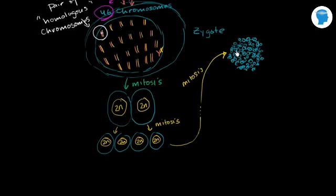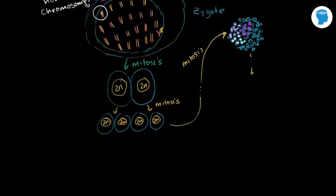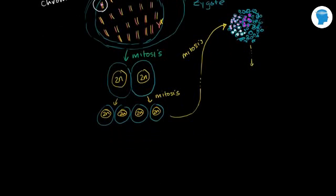These cells are going to differentiate into the different parts of my body. For example, these cells right over here might eventually keep replicating, and they and their offspring might eventually differentiate into my brain cells. These cells here will differentiate into my heart, and these right over here might differentiate into my lungs. All of these will eventually differentiate into all the things that make me, me. So with a lot more mitosis, you're eventually going to have a human being.